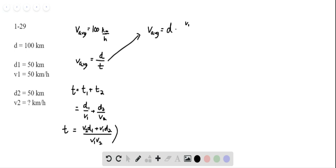It would be V1 V2 over V2 D1 plus V1 D2. We invert it because we're dividing by T, not multiplying by T. So we have this expression.